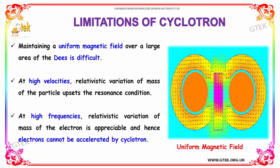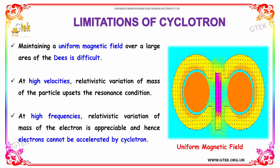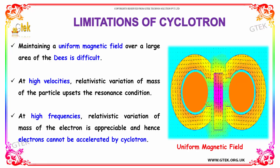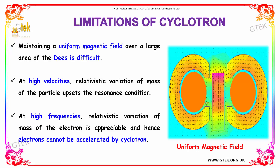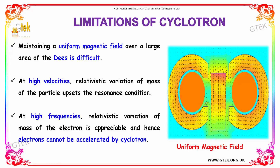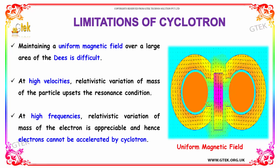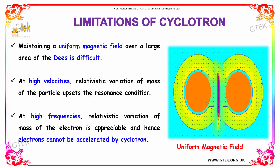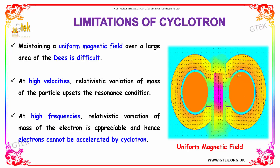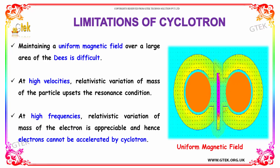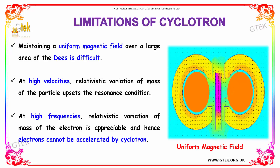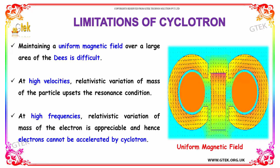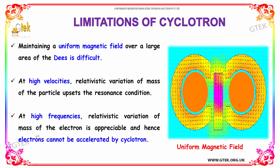Regarding the limitations of cyclotron: maintaining a uniform magnetic field over a large area of the D's is really difficult. At high velocities, the relativistic variation of mass of the particle upsets the resonance condition. At high frequencies, the relativistic variation of the mass of the electron is appreciable, and hence electrons cannot be accelerated by cyclotron.